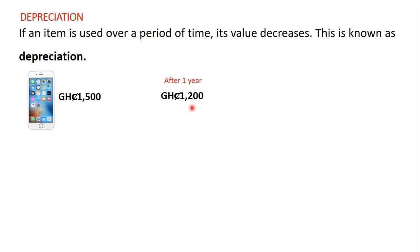So he reduced the price of the phone from 1,500 GHS to 1,200 GHS and sold it to his friend. His friend also used the phone for another year and decided to sell it to another person. Because he had also used the phone for one year he couldn't sell it at 1,200 GHS, so he reduced the price to 800 GHS.